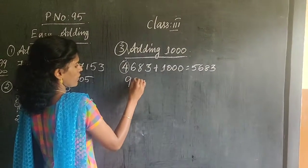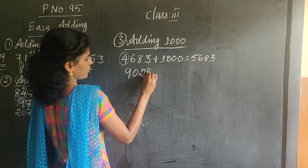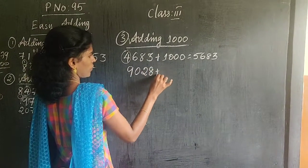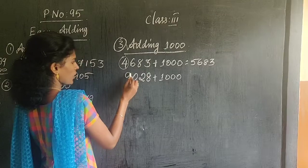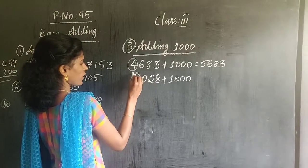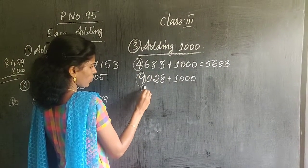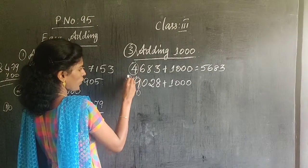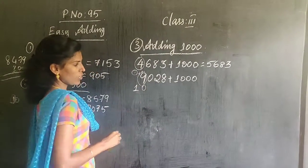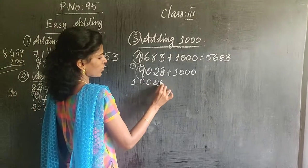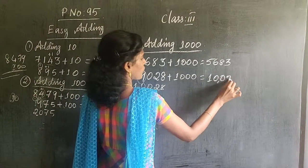Now suppose the thousands digit is 9. You have to add 1 to the thousands place — 9 plus 1 is 10. So you write only 0 and carry the 1 to the next digit. But here there is no next digit, so the 1 comes as it is. So the answer is 10028.